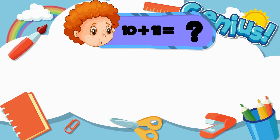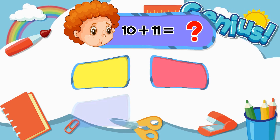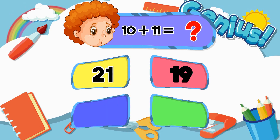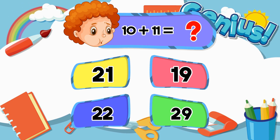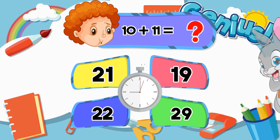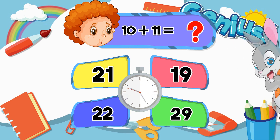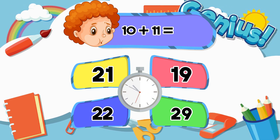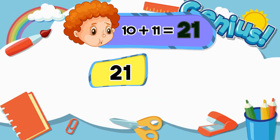What is 10 plus 11? 21, 19, 22, 29. The answer is 21.